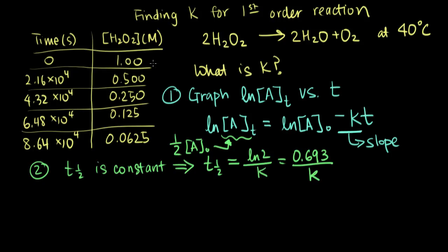Here, from our first data point to our second data point, and I will just actually number these, so you know what I'm talking about. If we go from data point 1 to 2, we've halved our concentration, and the time that's gone by is 2.16 times 10 to the 4 seconds.